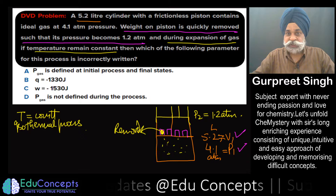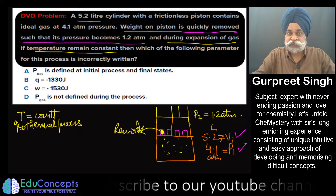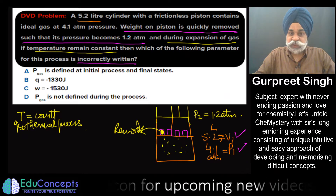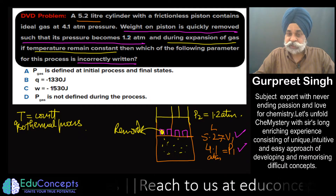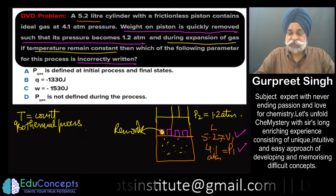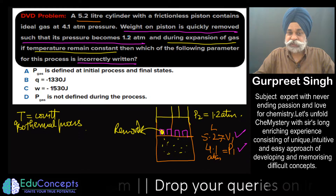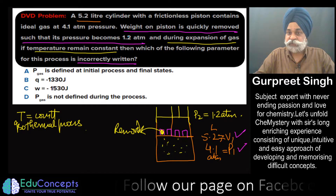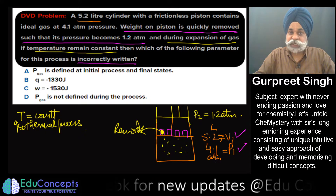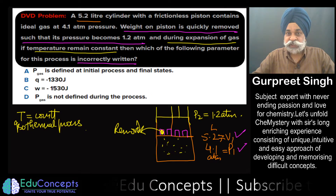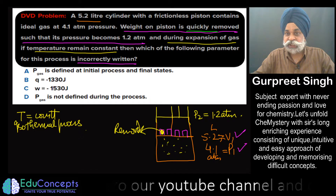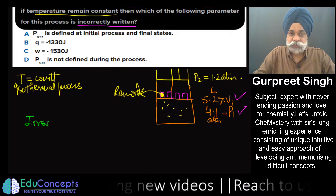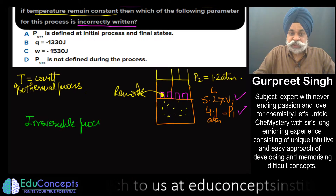What is to be found is: which of the following parameters is incorrectly written? Seeing the options, it seems like it is a numerical question. But if you have a good understanding of the concept, you can rule out some options and arrive at an answer in very little time. First, you have to figure out that the weight is 'quickly removed' — what does that mean? It means it is an irreversible process.